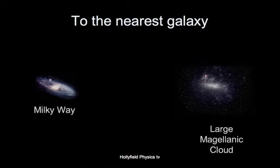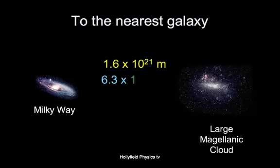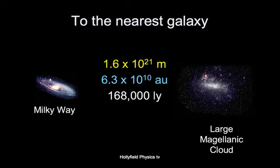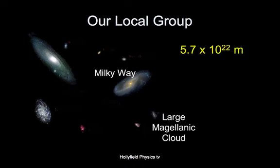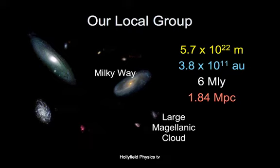Our nearest galaxy, a large Magellanic cloud. A little bit further than this. It's 168,000 light years away. Our local group of galaxies, there's the large Magellanic cloud in the Milky Way. The large one in the top left corner is Andromeda. Across there, 6 million light years.